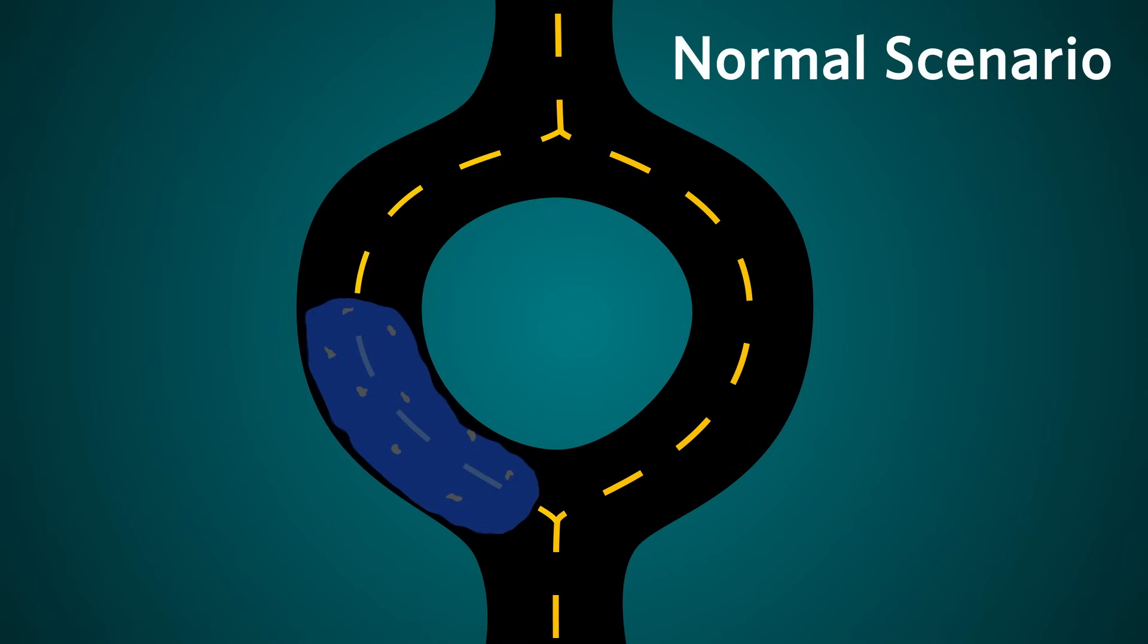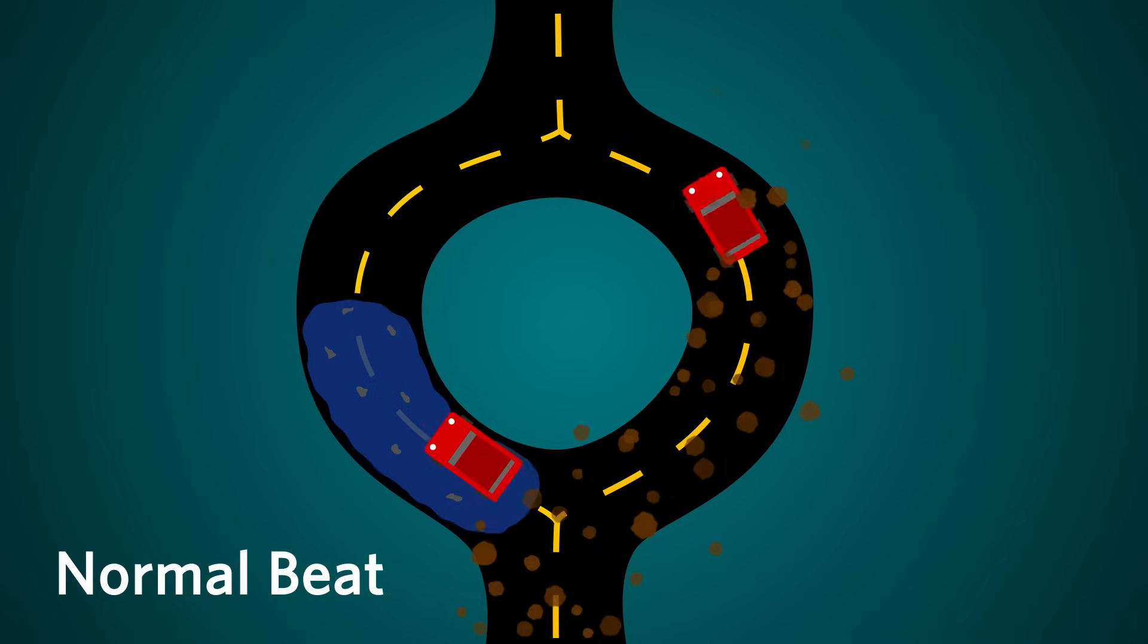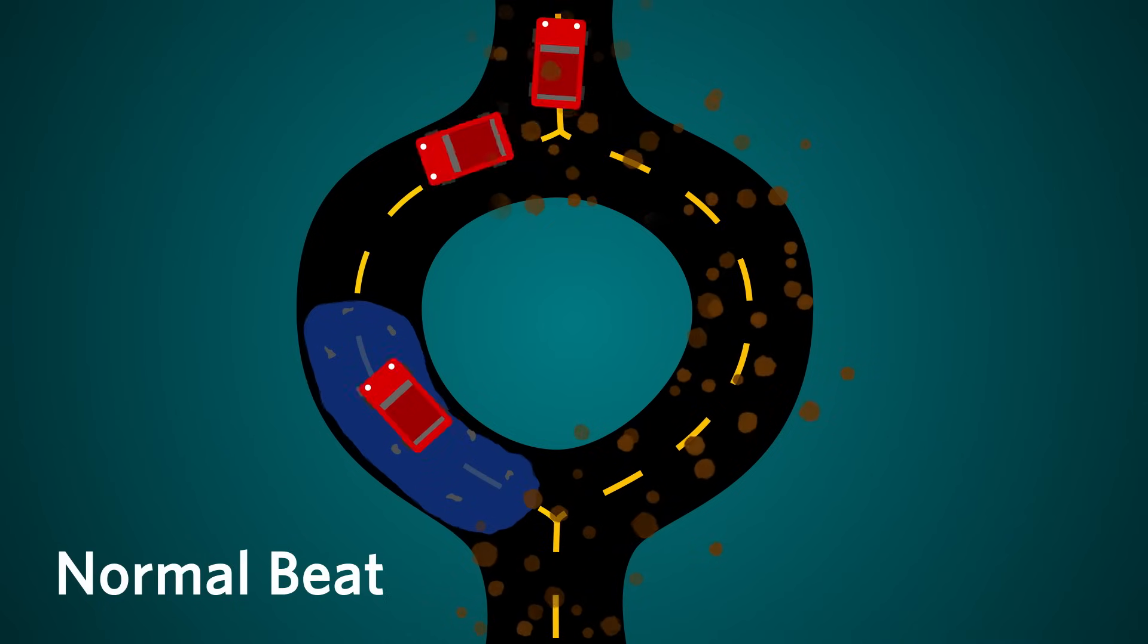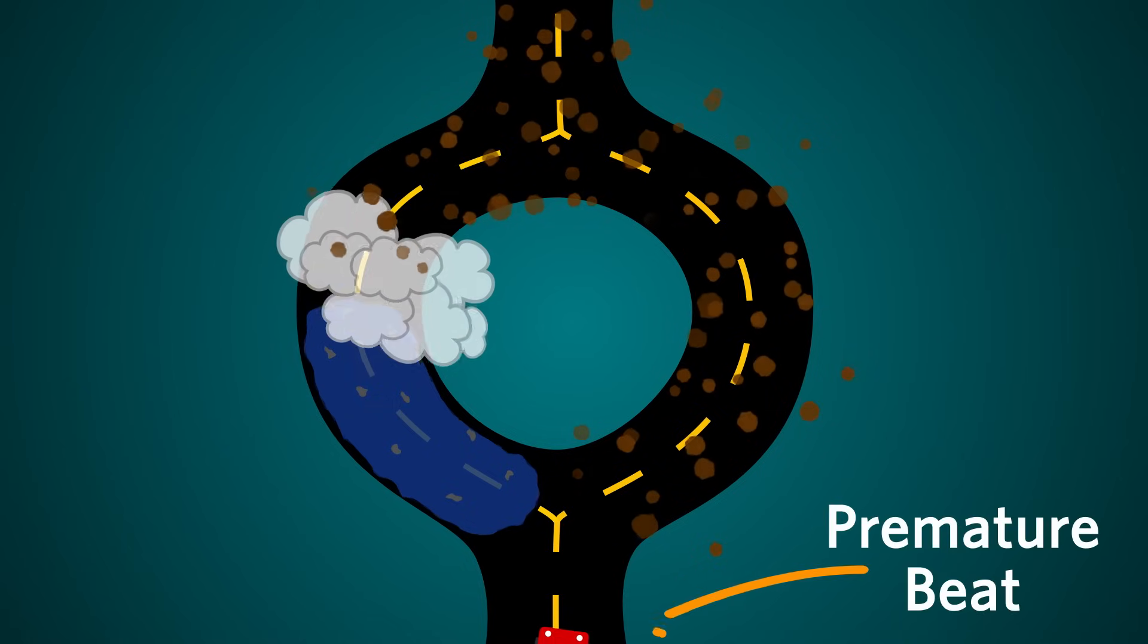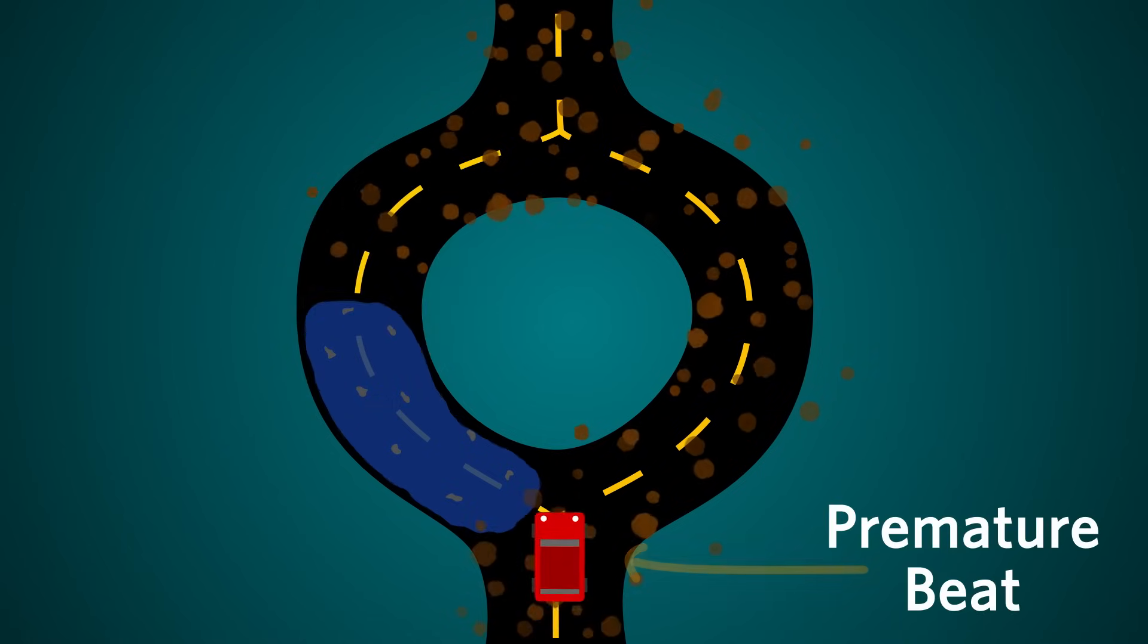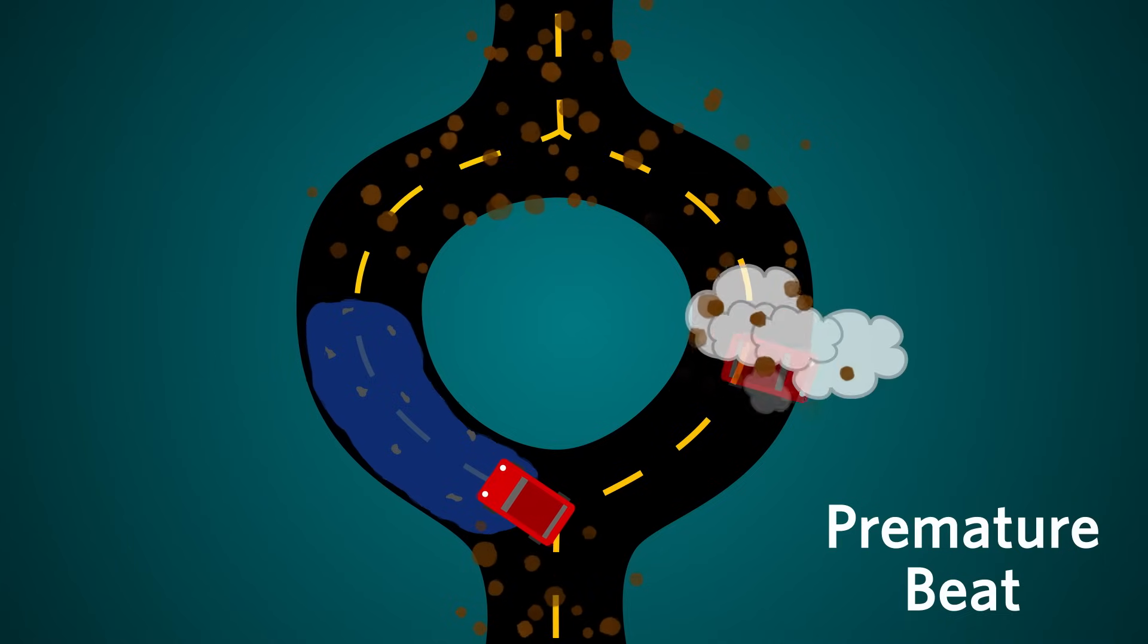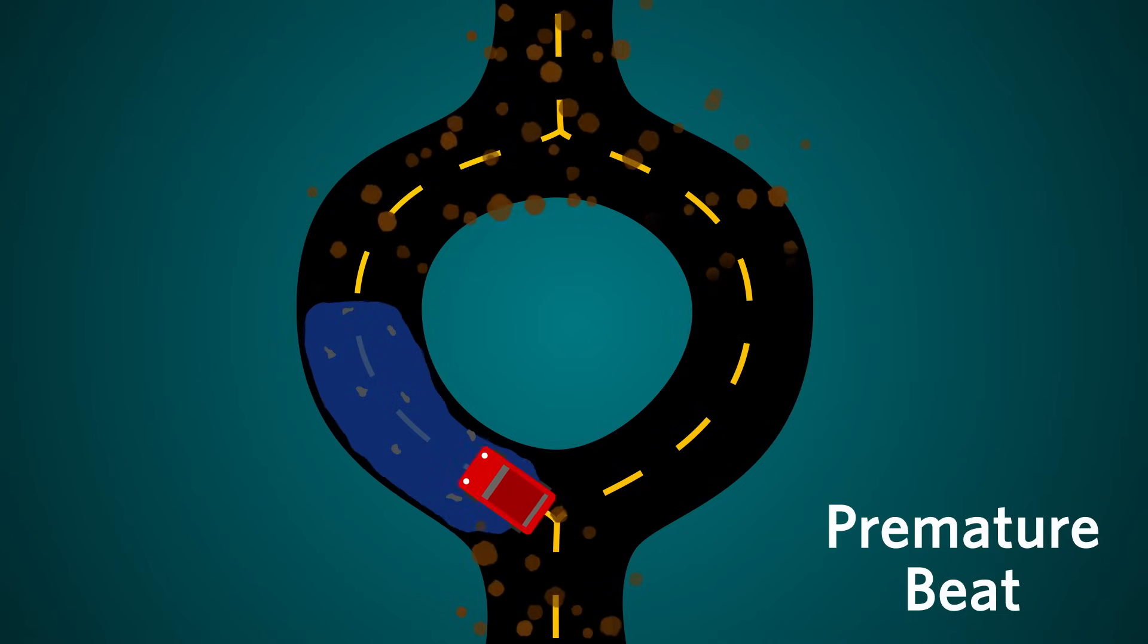Now in order to set up a reentry circuit, we need a premature beat and it's got to be timed just right. Well imagine we get a normal beat and what happens is what we just described, but imagine we then get right after that another premature beat. That premature beat's going to come along and it's going to split. The car going down the fast road is pretty quickly going to run into the dust tail of the car that just went ahead of it in the normal beat. And when a car goes into the dust, can't see anything, crashes, that's it, same way as an action potential can't travel through conducting fibers that are in the refractory period.